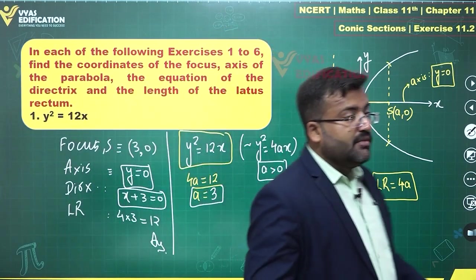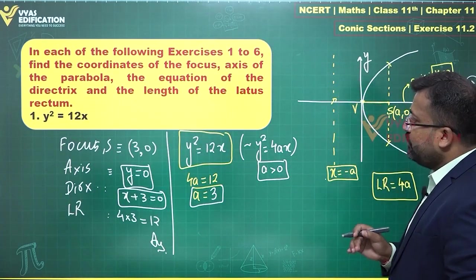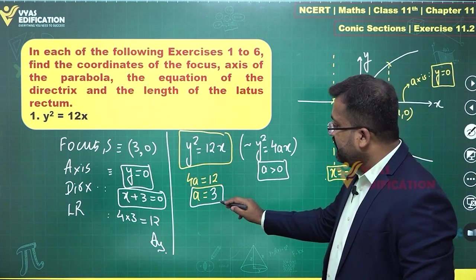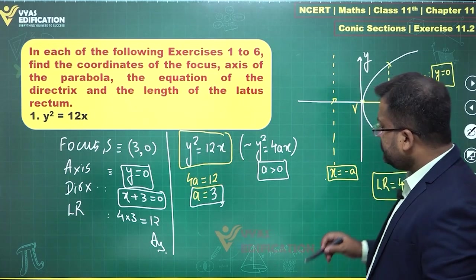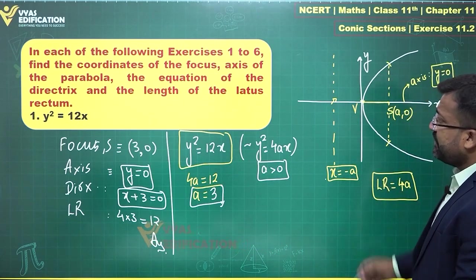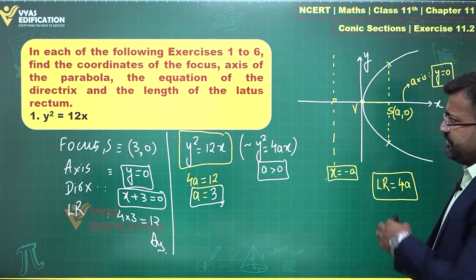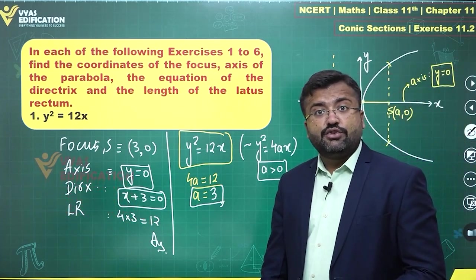As you can see, with the help of this diagram of standard parabola opening rightwards, Y² = 4ax, with the help of that, the only thing that we need to identify is a in the given question and rest all things become very simple with the help of this information. So, that's all that you have in this question.